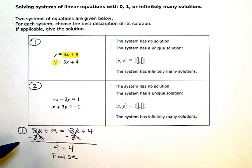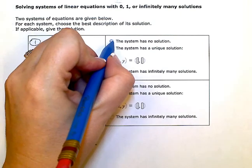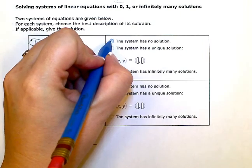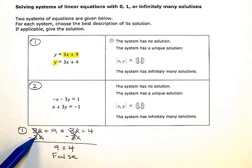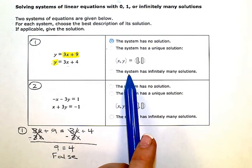Since all my variables dropped out, and I'm left with a false statement, I'm going to mark the system has no solution here. Now if this would have happened, and all my variables would have dropped out, and I would have been left with a true statement, such as 9 equals 9, let's say, just for instance. If I had been left with a true statement, then I would have marked the system has infinitely many solutions.